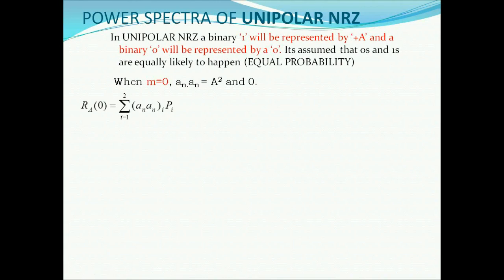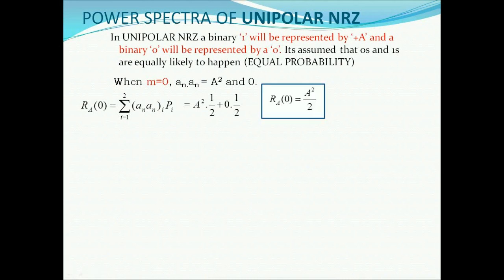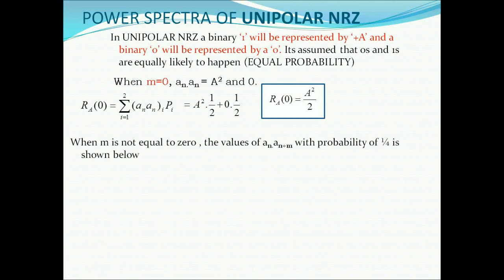When m = 0, An · An = A² when both are 1, and 0 when An = 0. We calculate the autocorrelation Ra(0) = summation i = 1 to 2 of An·An(i) × Pi. Since we have only two possible combinations, the probability of occurrence is 1/2. Hence Ra(0) = A² × (1/2) + 0 × (1/2) = A²/2.